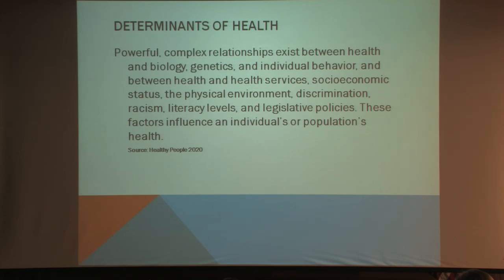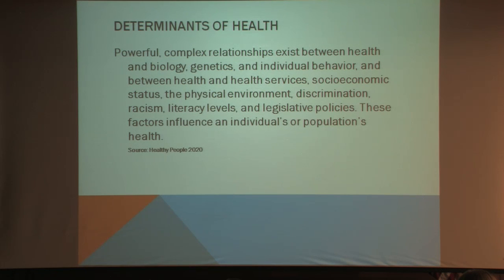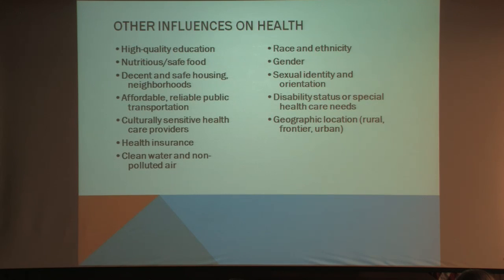Determinants of health is another area that was discussed at the meeting. However we define our health — biologically, genetically, our individual behavior — those things are related to various things in our environment: the health services we seek, the health status we're trying to achieve, our socioeconomic status, the physical environment, discrimination, racism. There were a lot of discussions about racism in health this past week. Other influences include determinants of health such as location — where you live has a lot to say about how your health is.